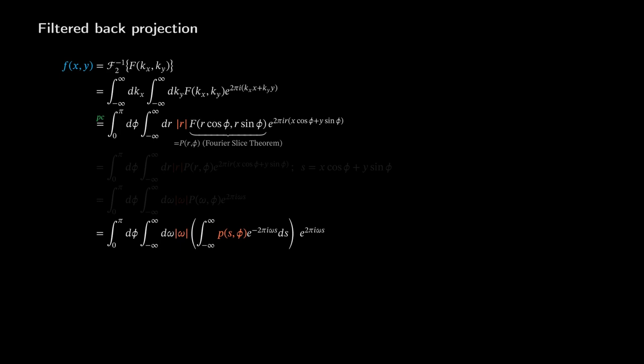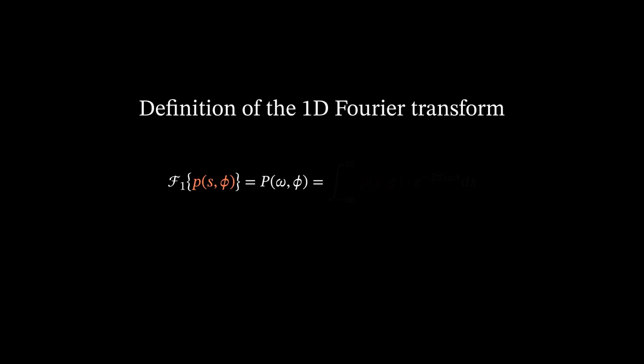Now we apply the Fourier slice theorem, which will be explained in two minutes. When we now remember the Radon transform, we can substitute a part of the expression by s. For the last step, we use the definition of the one-dimensional Fourier transform of the detector function small p.